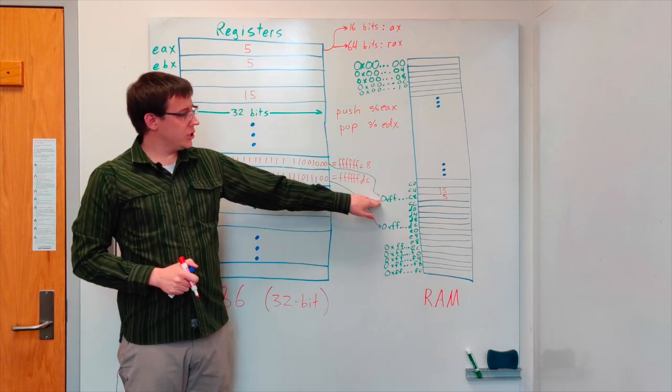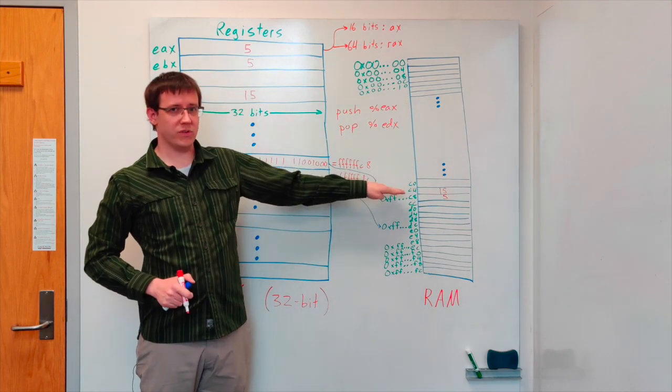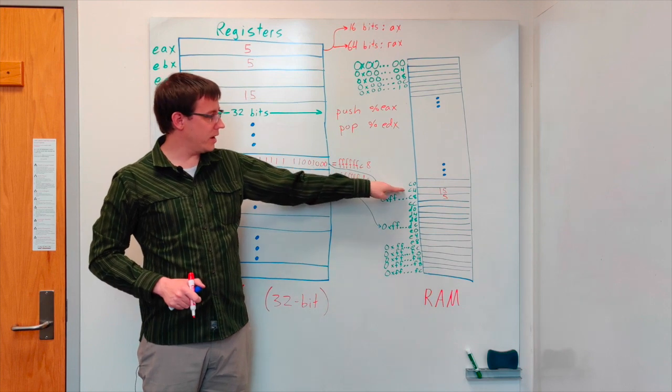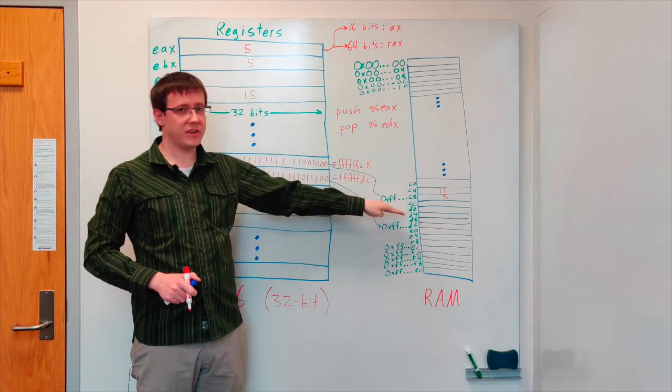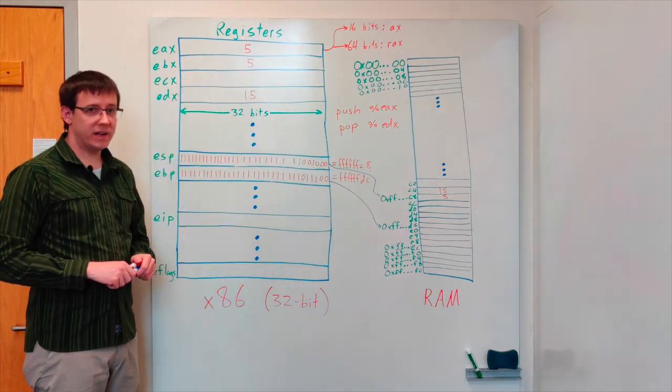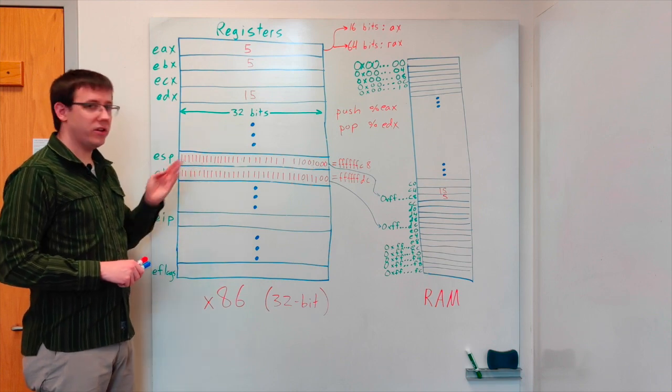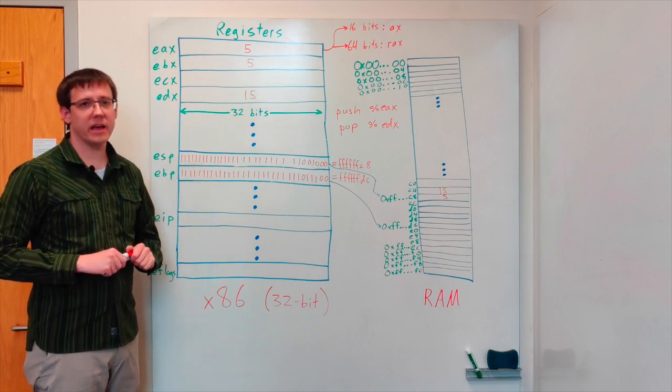So when we push, data goes onto the stack and the stack pointer moves up. When we POP, data goes into a register and the stack pointer moves down. Moving the stack pointer means changing the value that is stored in the ESP register.